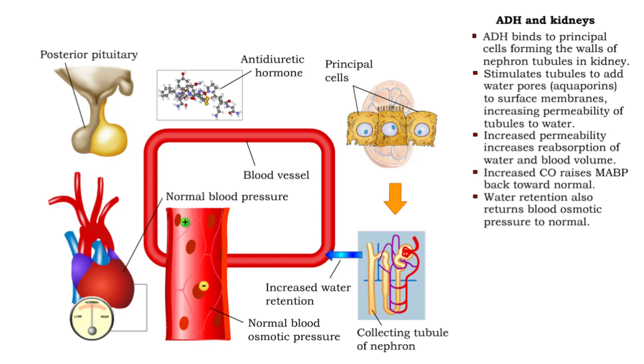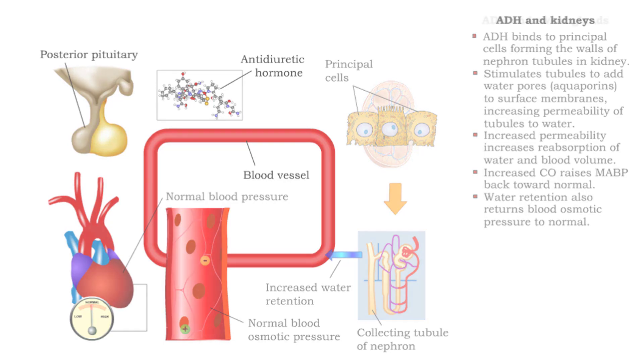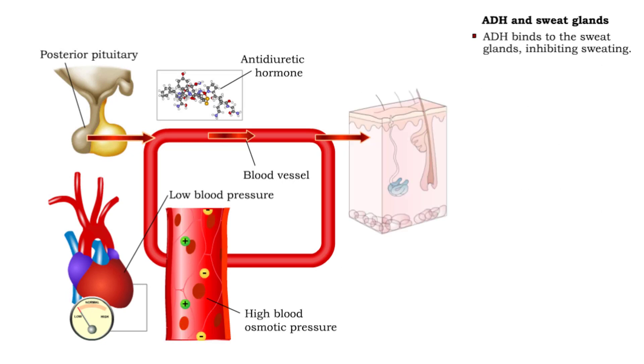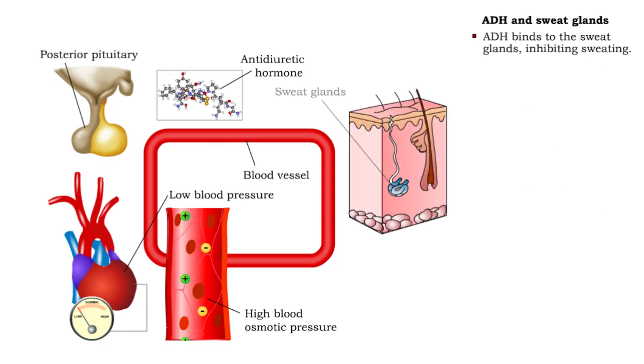Increased venous return and cardiac output helps normalize blood and osmotic pressure. ADH also binds to sweat glands, reducing sweating.